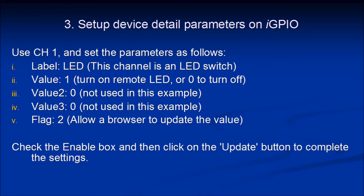Once you are able to do that, you would go to the device-specific parameters and use channel one only, setting the channel one parameters as follows: add a label — in this case 'LED'; enter a value, where one means to turn on the remote LED or zero to turn it off. Value two and value three are not used, and flag should be two, which means the browser can update this value at the IGPIO website. Check the enable box and then click the update button to complete the settings.